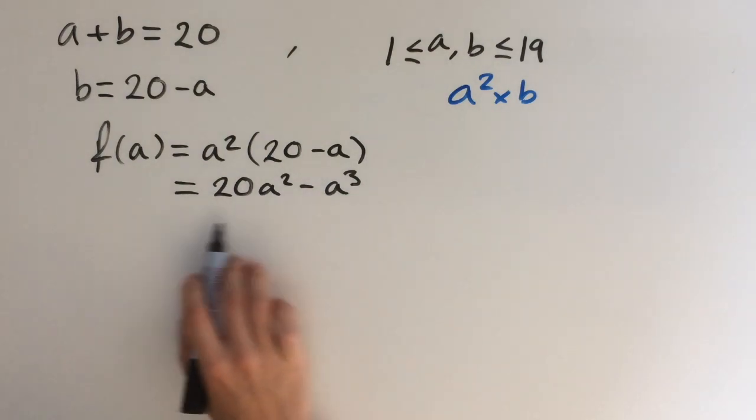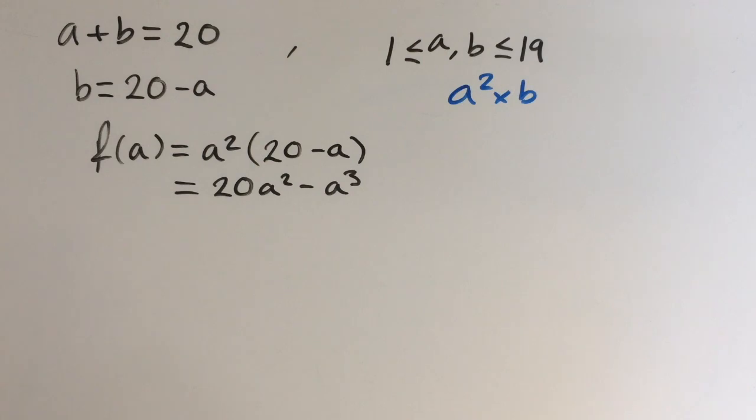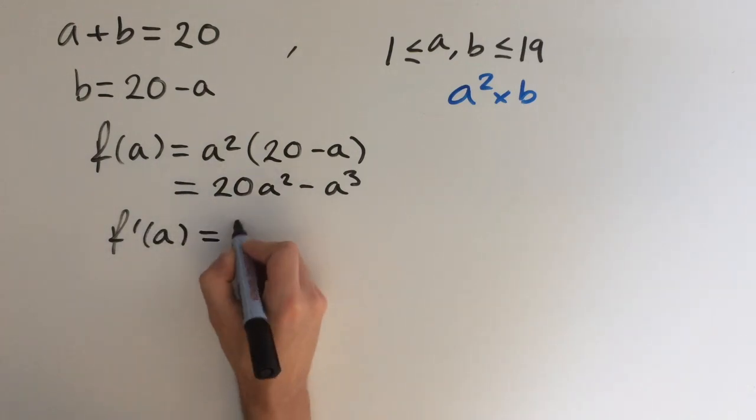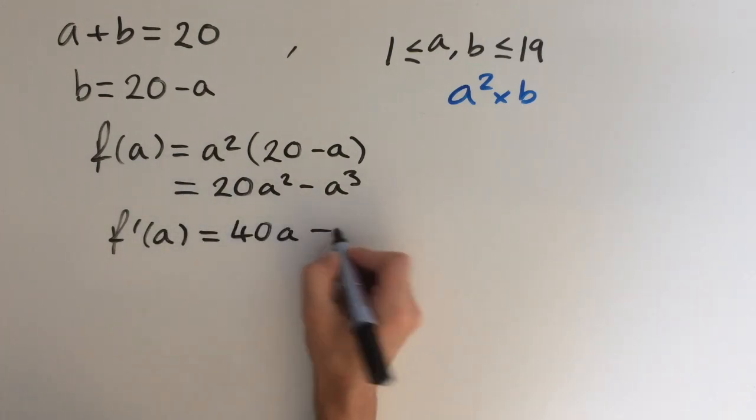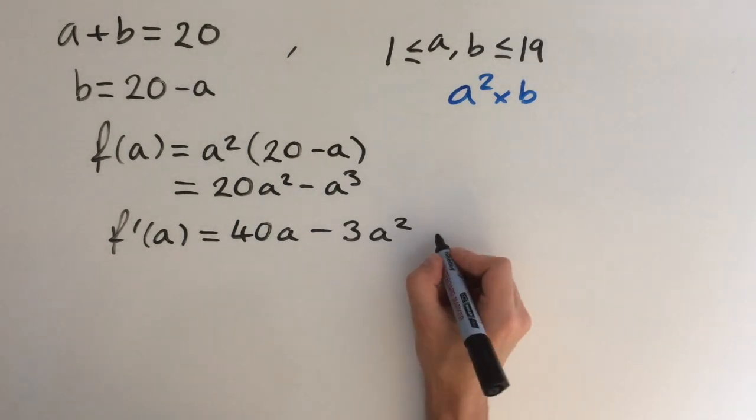Our problem is now to maximize this function, given that a is in the range between 1 and 19. We can do this by differentiating and finding its turning point. So let's do that. f dashed of a is going to be 40 times a minus 3 a squared. And the turning points will be precisely the roots of this equation right here.